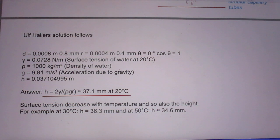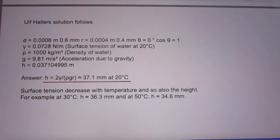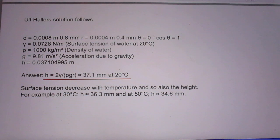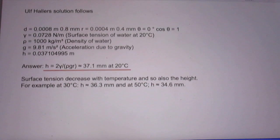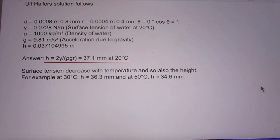And so he substitutes now all these values of d, gamma, rho, g, and h, and out pops 37.1 millimeters at 20 degrees centigrade. And if you were to change the temperature, then the height would be 34.6 millimeters, not 37.1.